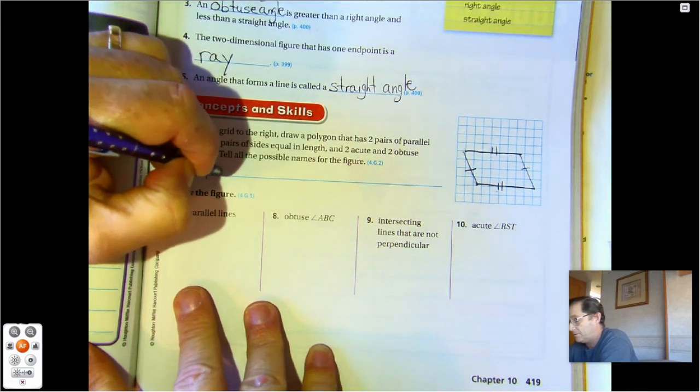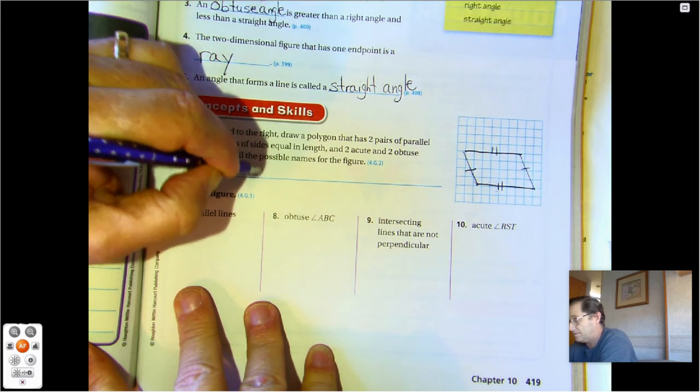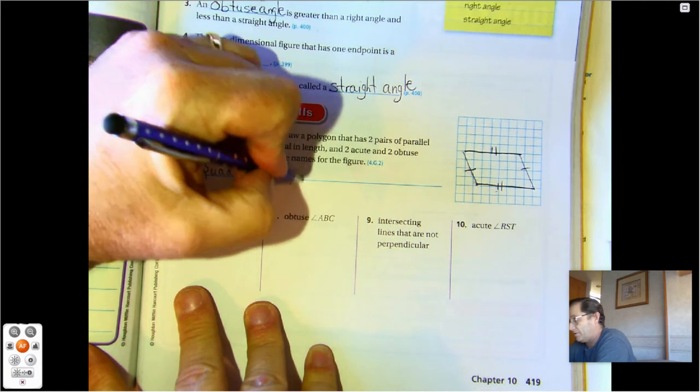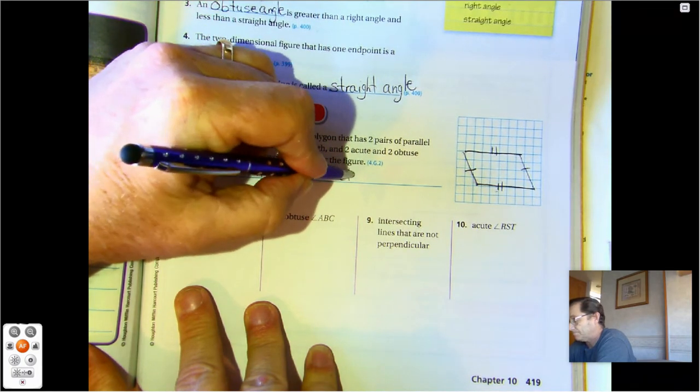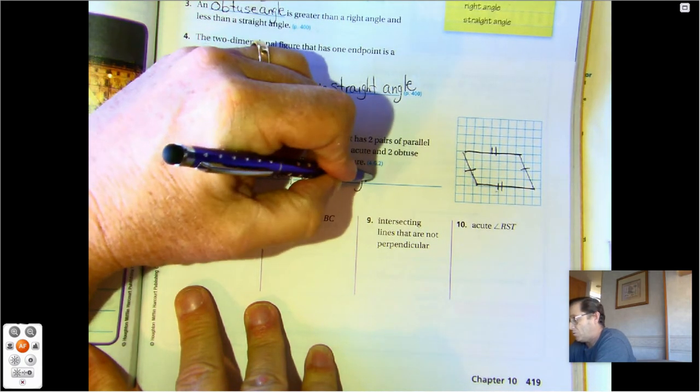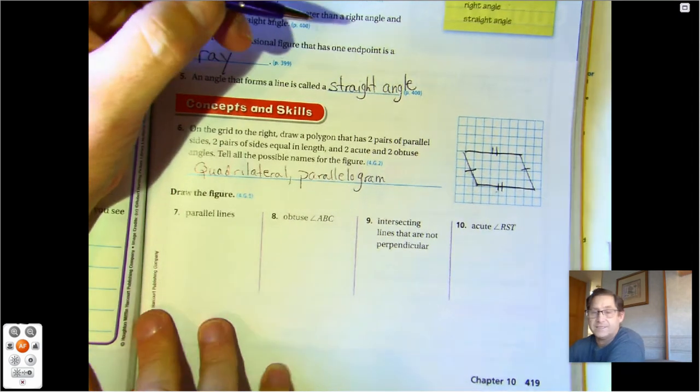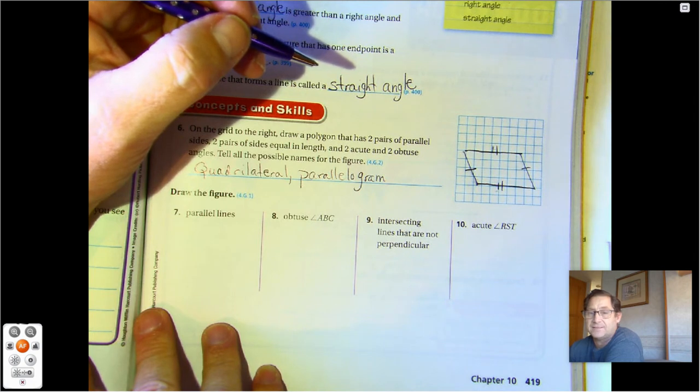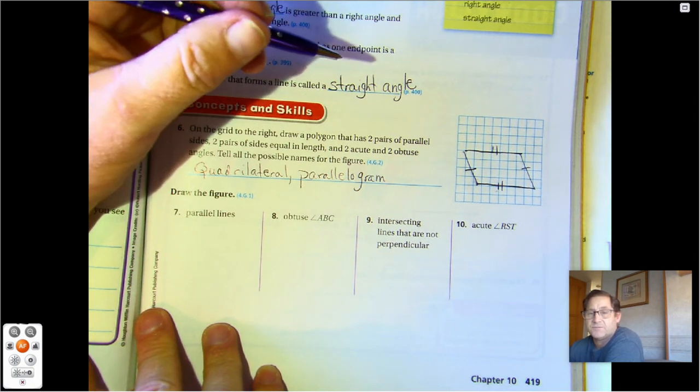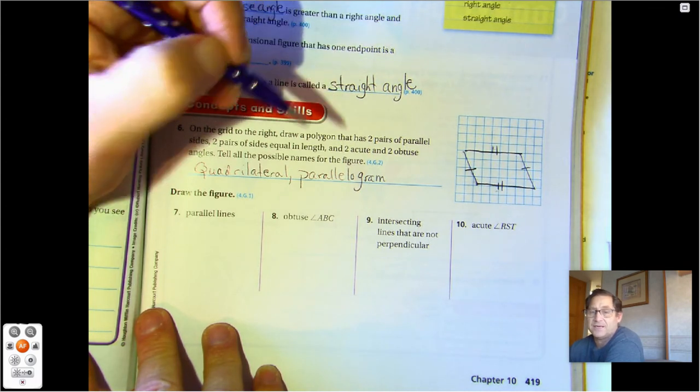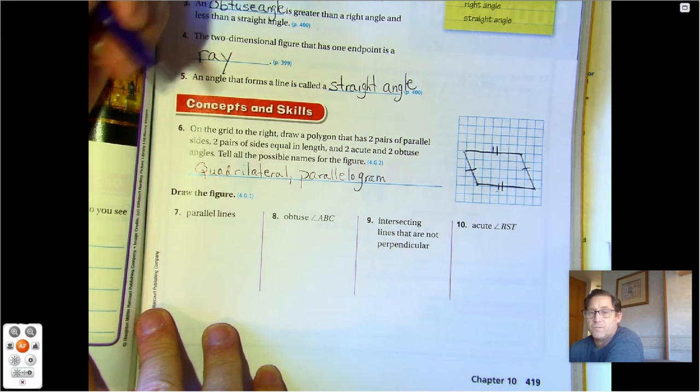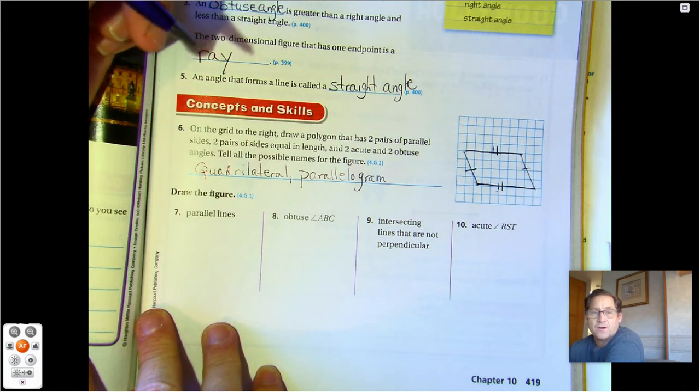So what is this? Well, it's a quadrilateral because it has four sides, and it's a parallelogram. It's not a square because it doesn't have four equal sides and it has no right angles. It's not a rectangle because it does not have four right angles. It's not a rhombus because it doesn't have four equal sides, and it's not a trapezoid because it has more than one pair of parallel sides.